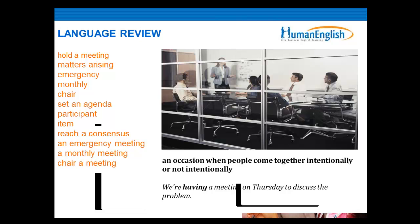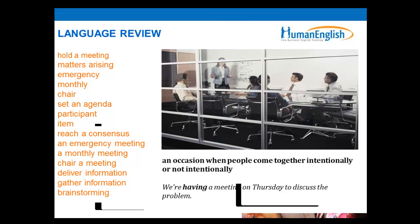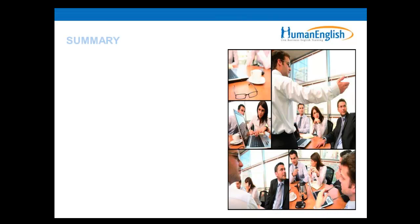Often at work you can have monthly meetings to update about all the new information happening in that month. A meeting does three things: delivers information, gathers information, and it can be used for brainstorming. Brainstorming is a problem-solving method in which all members come together to contribute ideas. This is some review from last week.